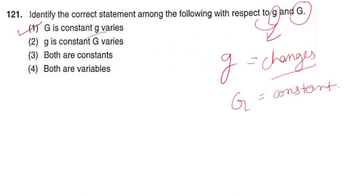Acceleration due to gravity varies between the Moon and the Earth, so it varies. Therefore, option number 1 is the correct option: G is constant, g varies.